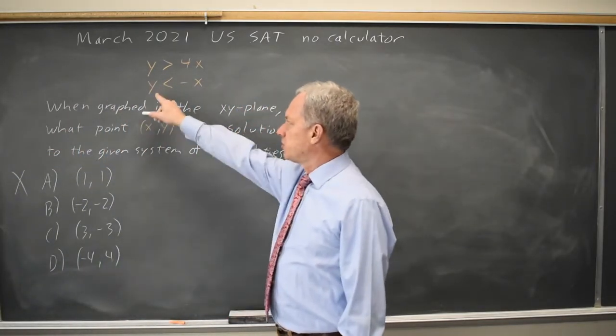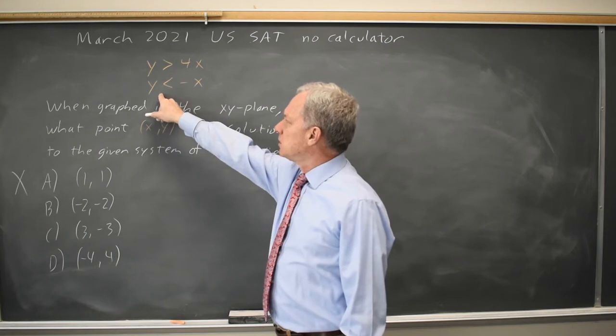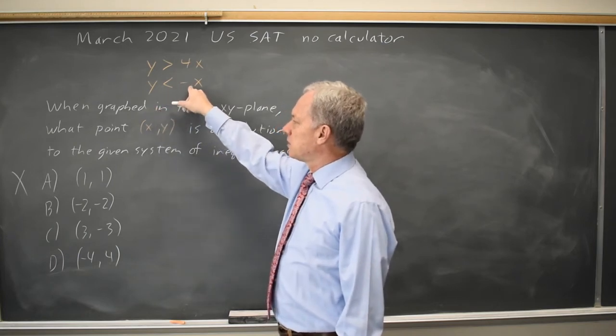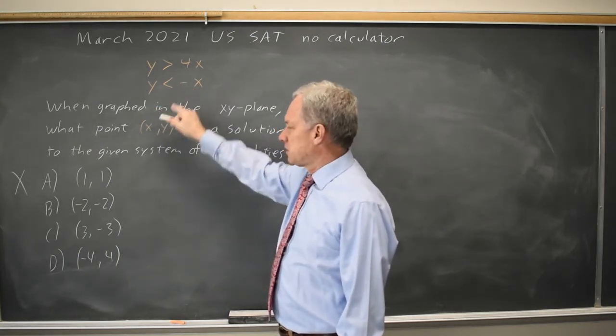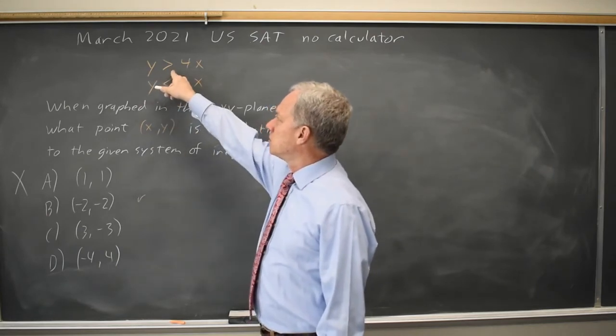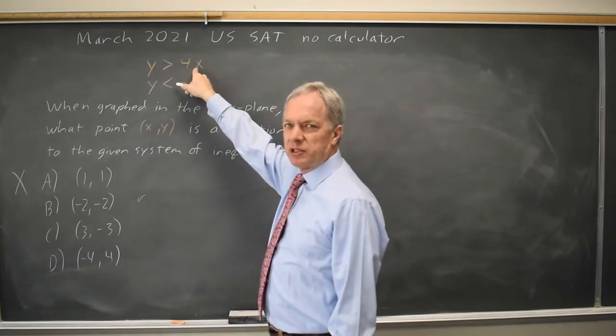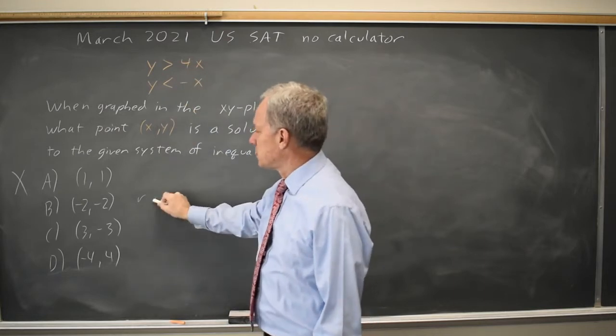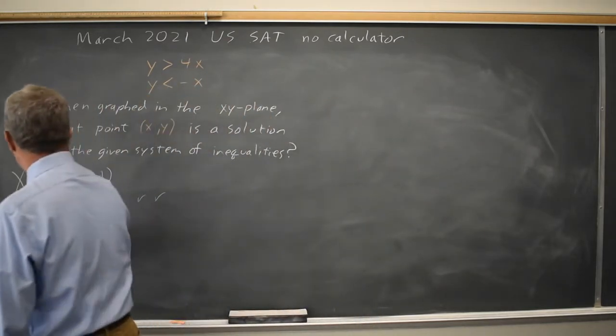Let's try (-2,-2). Is -2 less than minus -2, which is positive 2? Yes. Is -2 greater than 4 times -2, which is -8? Also yes. So choice B would be our correct answer.